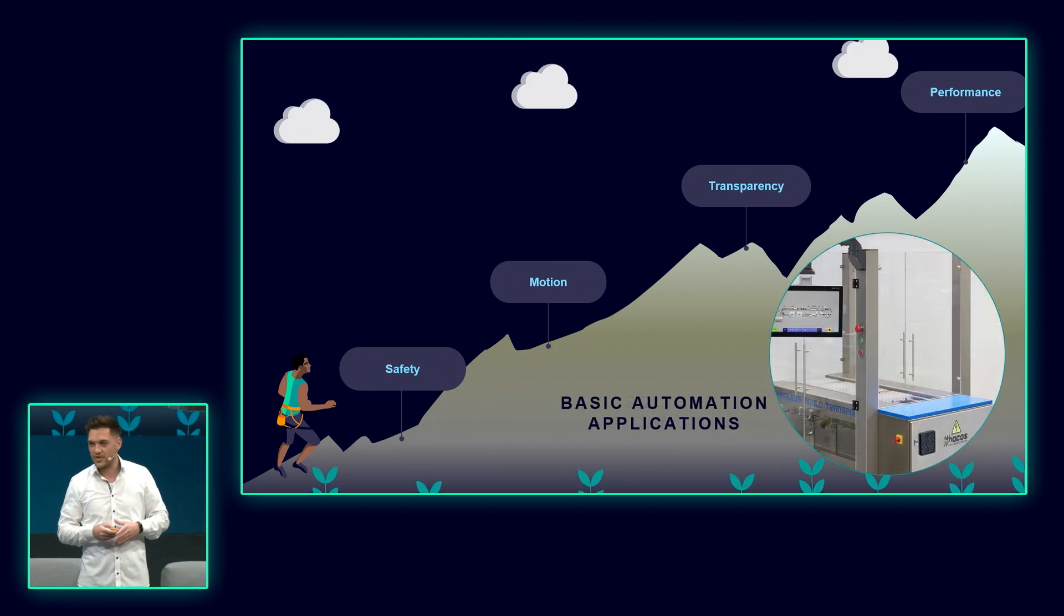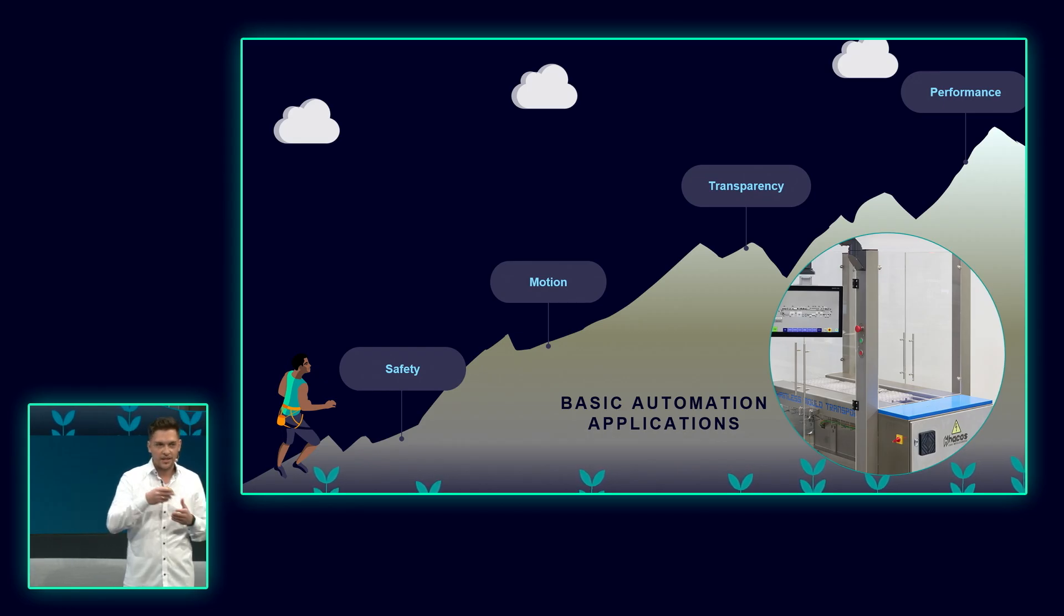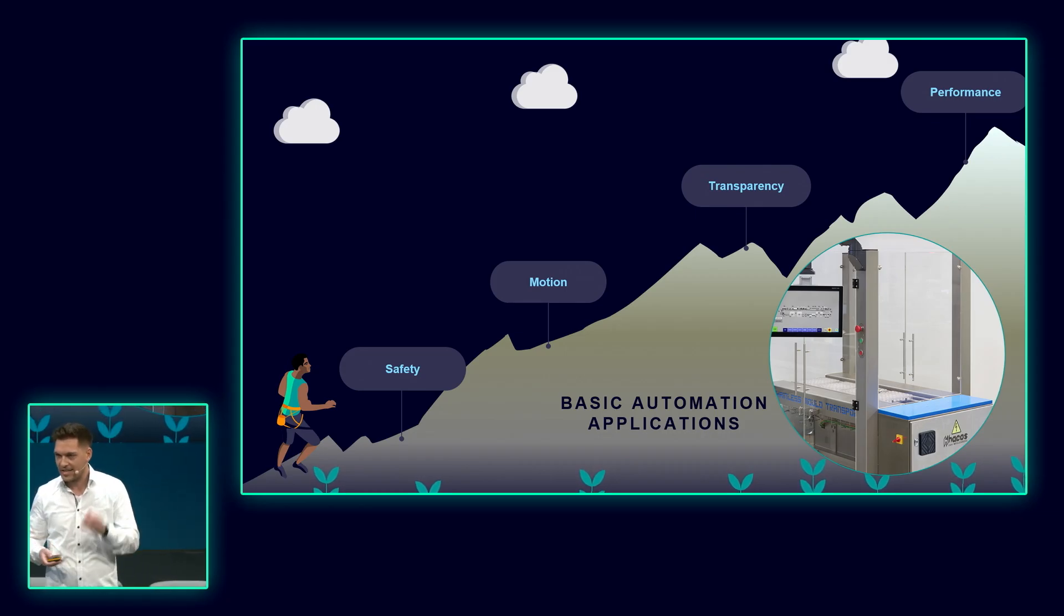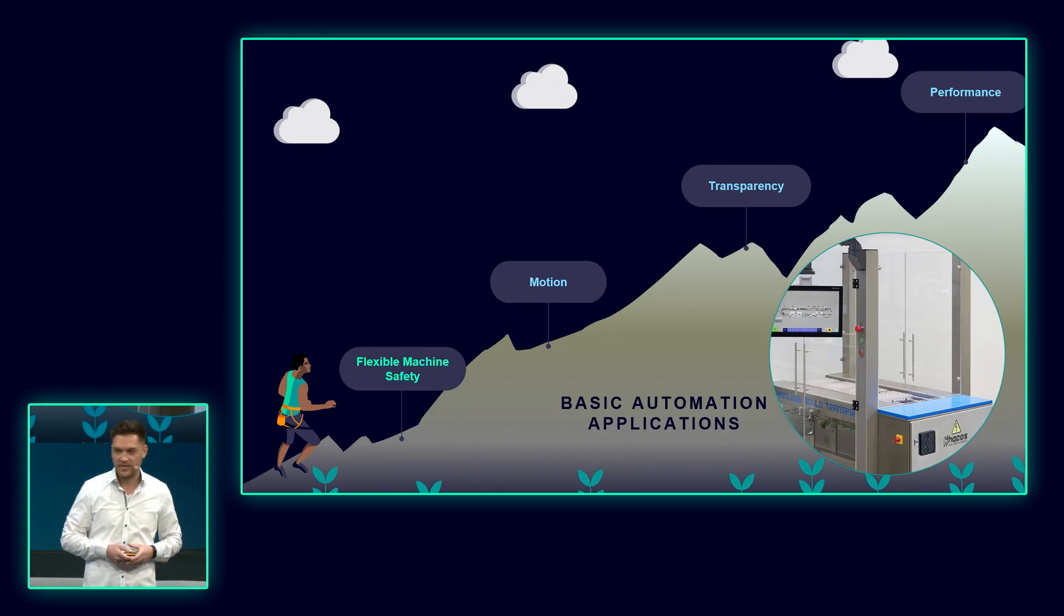What heights you can reach in terms of basic automation applications is interestingly determined by quite similar factors. If you're looking at a basic automation machine, it's also necessary to fulfill safety requirements to avoid any harm to human or machine. I spoke about fast-changing market requirements, which might lead to the fact that you have to build machines with different levels of complexity. That would mean you have to change your safety concept over and over again. Therefore, what you need is a flexible machine safety concept.